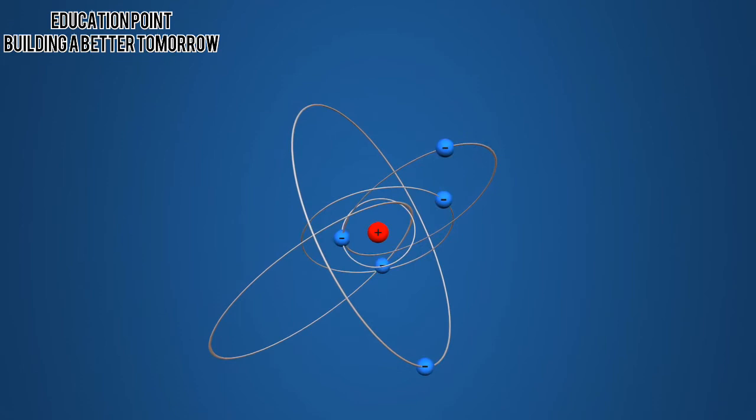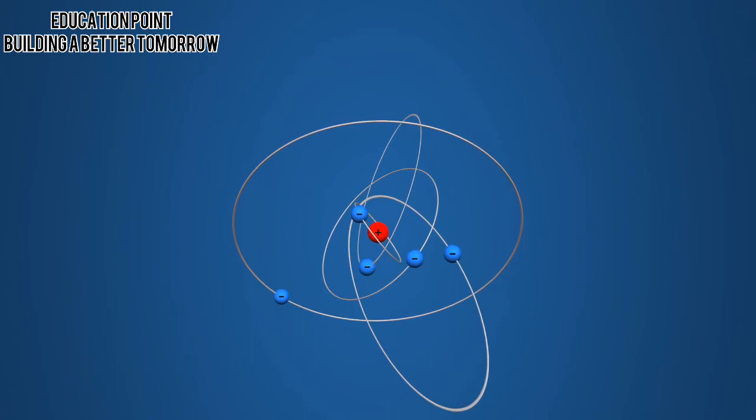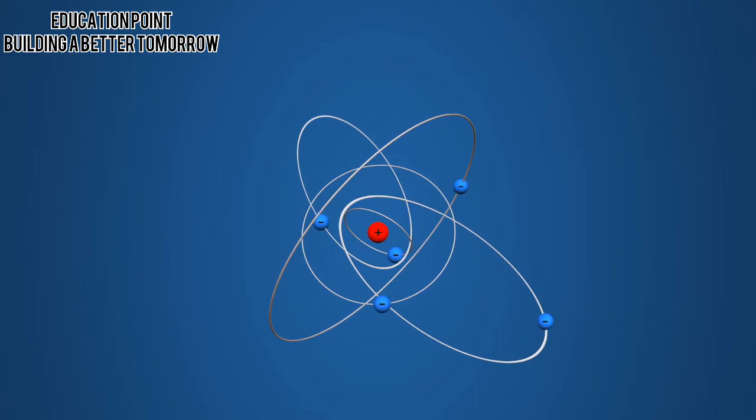Sommerfeld updated Bohr's atomic model and published his theory in 1920, which is also called the Bohr-Sommerfeld model. In this atomic model, the electrons can only circulate around the nucleus on certain orbits as well, but the orbits may also be elliptical.